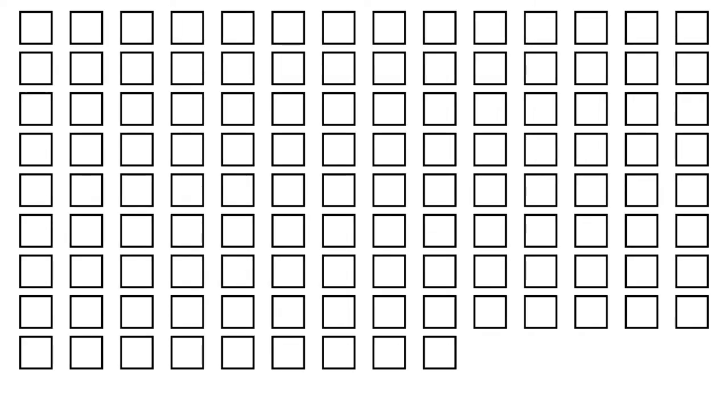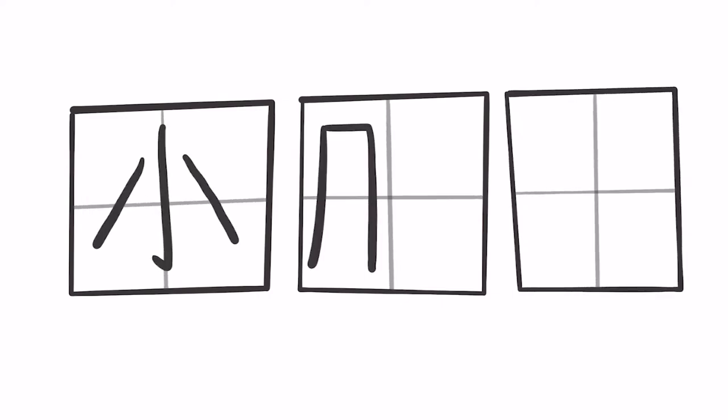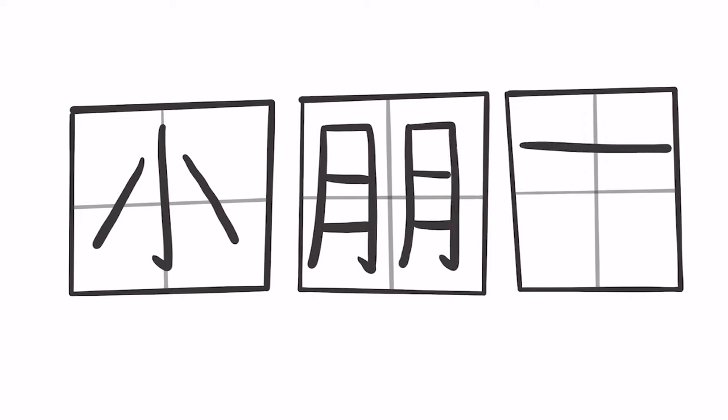Now imagine a bunch of equally sized squares on a piece of paper. A single Chinese character is drawn in exactly one square, and the strokes of the character are also drawn in a specific order. This is how you would write 'siu pang yao' in a top-to-bottom and left-to-right fashion.